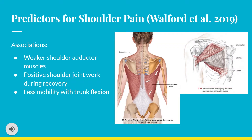Moving on to predictors of developing shoulder pain, a study by Woffer et al. in 2019 found a number of factors associated with increased shoulder pain in patients with paraplegia using manual wheelchairs. These include weak shoulder adductor muscles — specifically the pectoralis major and latissimus dorsi — positive shoulder joint work during recovery periods, meaning actively using the shoulder during supposed rest, and lower flexibility and mobility with trunk flexion.